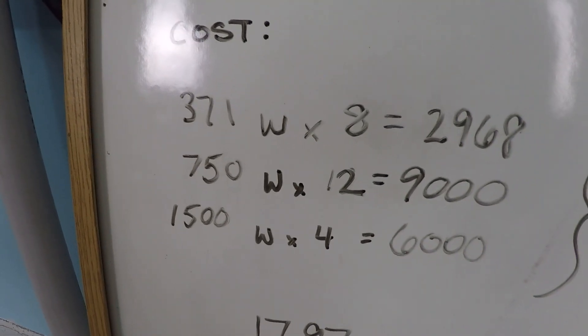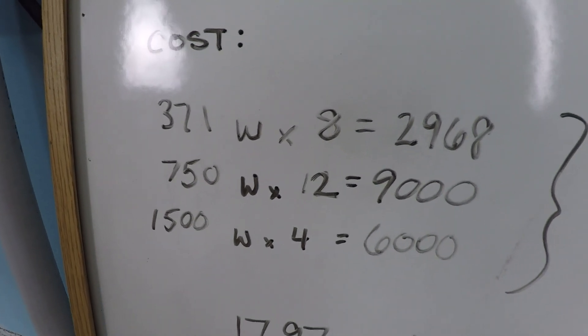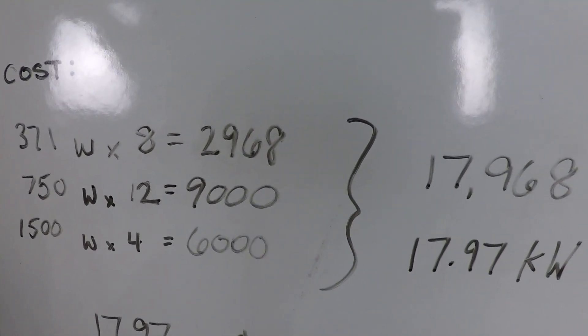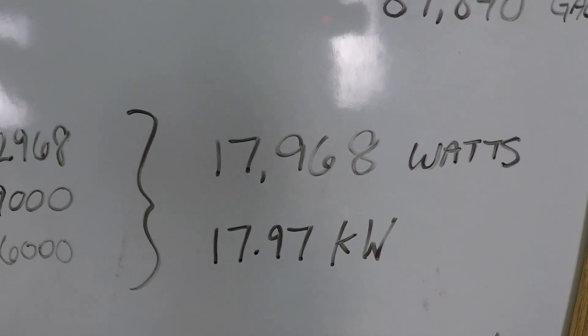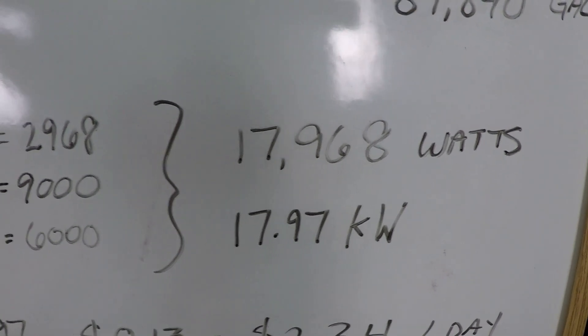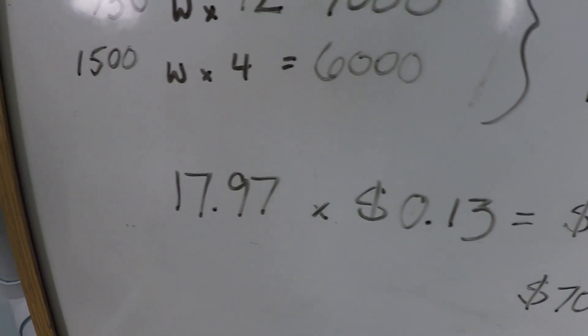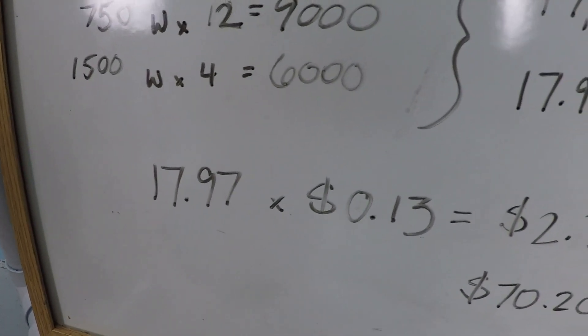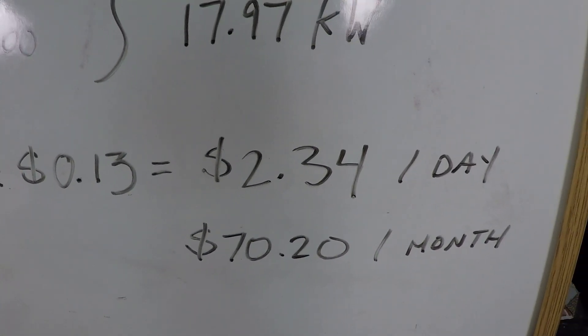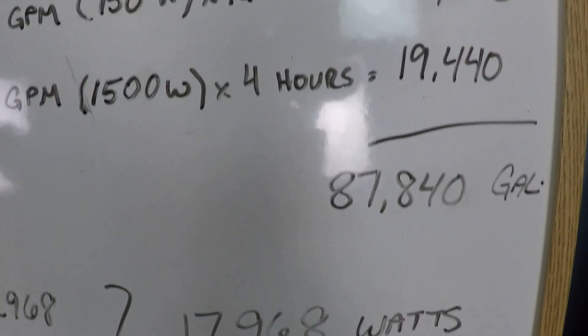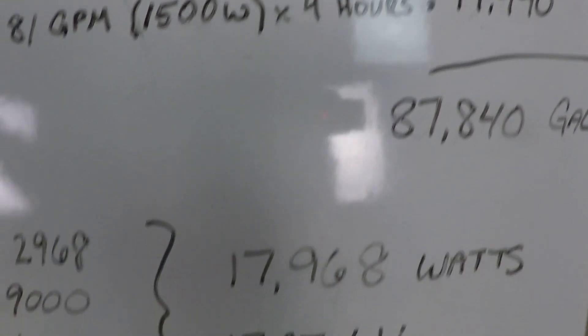Operation is summed up down here: 371 watts times 8 hours, 750 watts times 12 hours, and 1500 watts times 4 hours. Our grand total is 17,968 watts or 17.97 kilowatts power consumption. The national average being 13 cents per kilowatt hour, you could take that number times 13 cents per kilowatt hour and arrive at $2.34 per day to operate the pool such that we are filtering 87,840 gallons every day. That's basically $70 per month. It's pretty good.